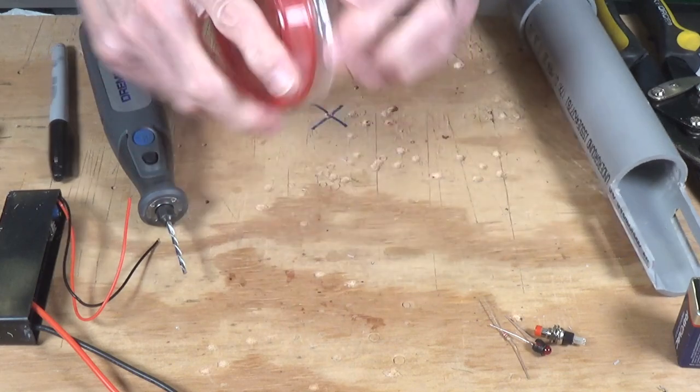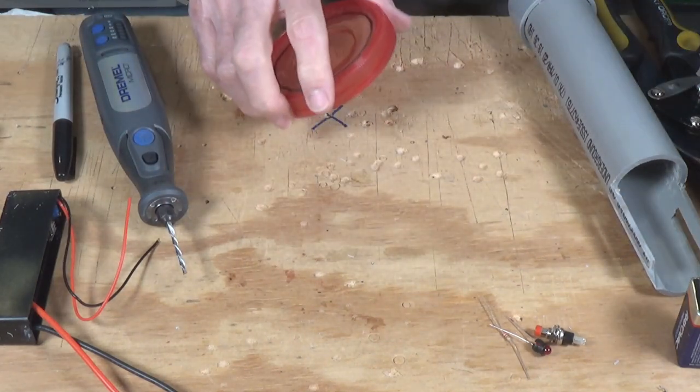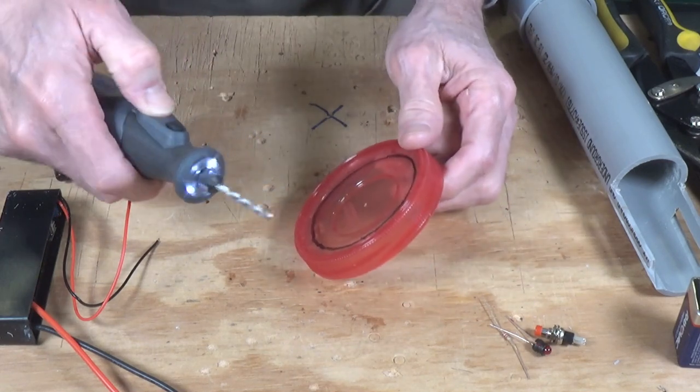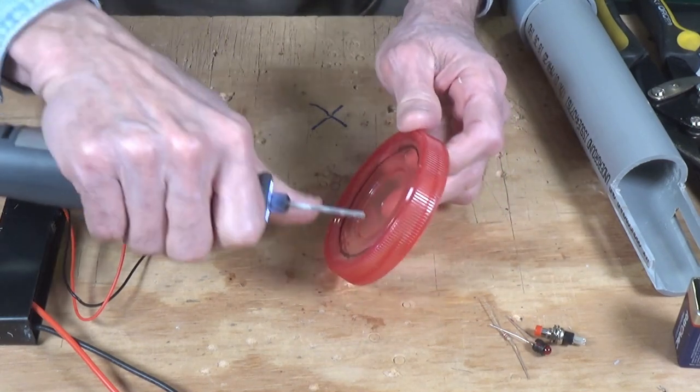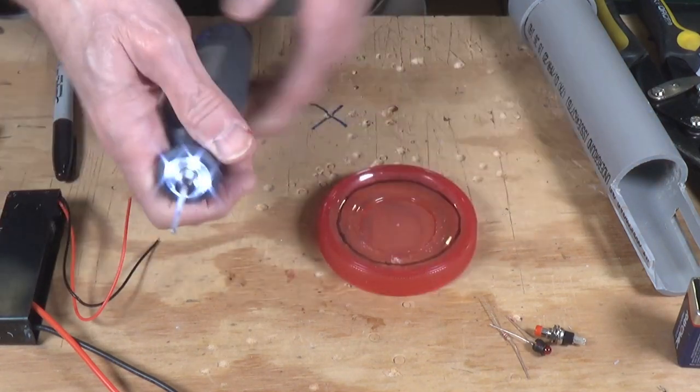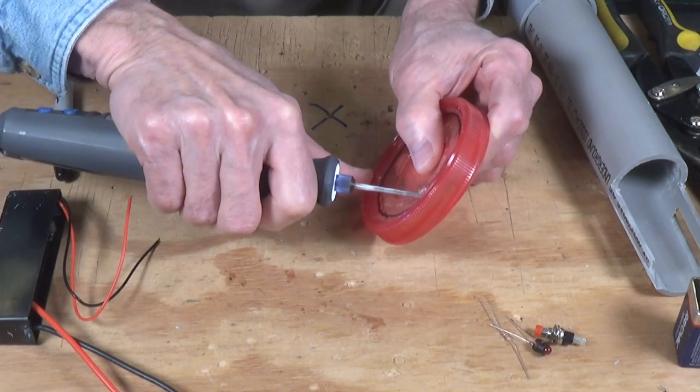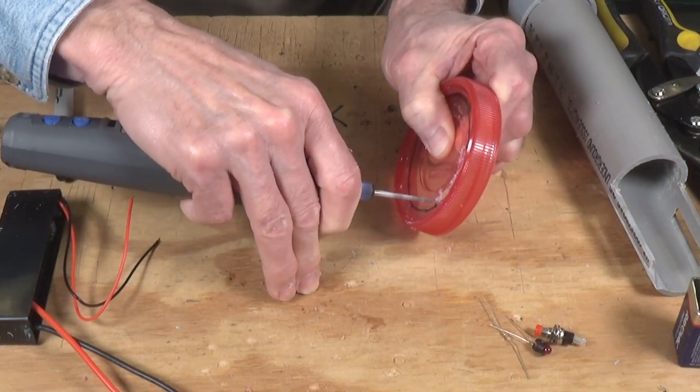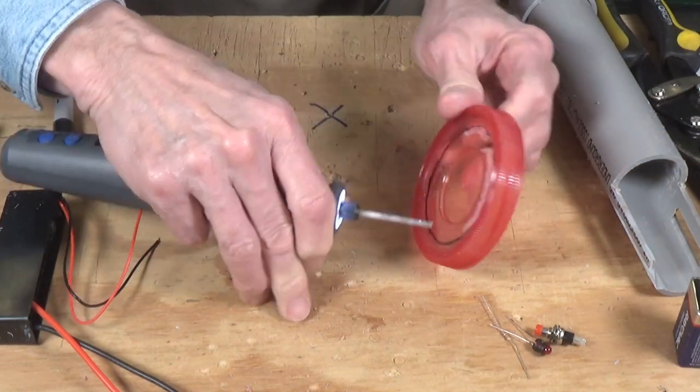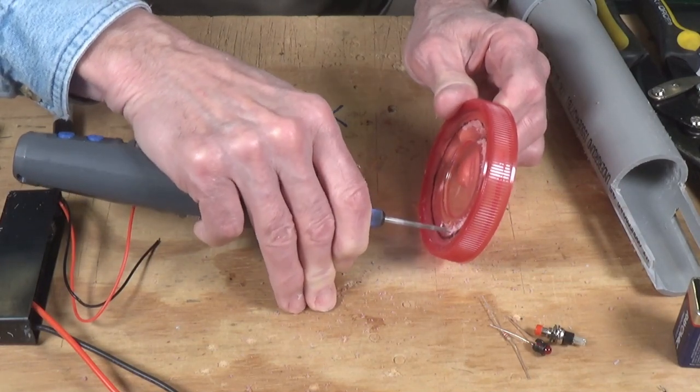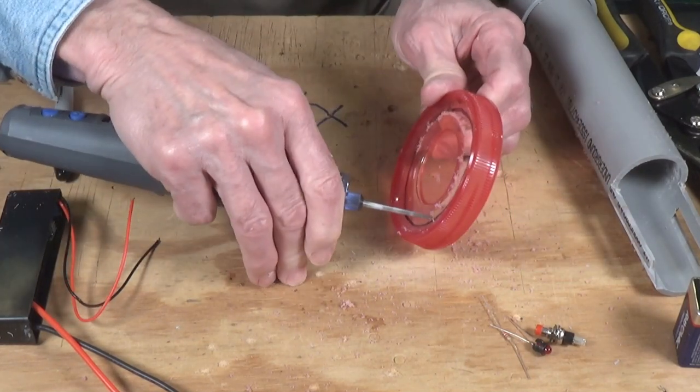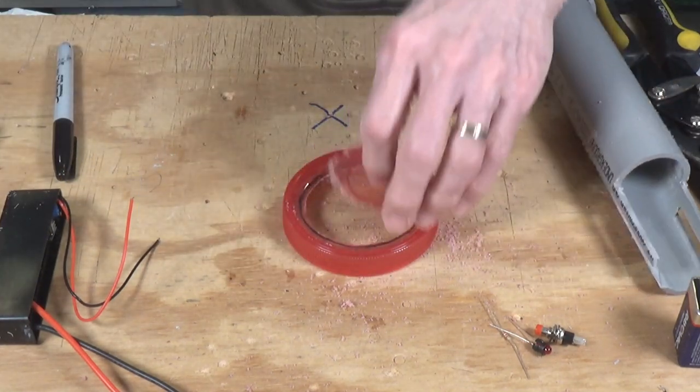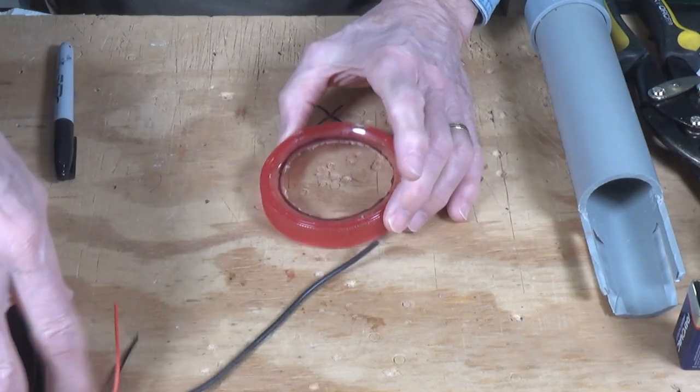Like so. And then let's see if we can cut this sucker. I've got my Dremel tool. And we should be able to just plunge in here. Okay, that made pretty quick work of that. So we've got that cut out. Now let's get some screen.